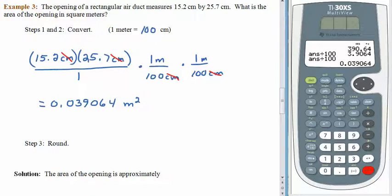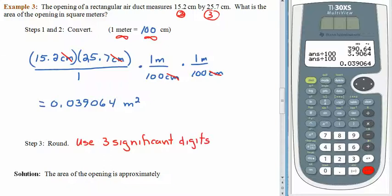And I know you want to keep all of those digits, but they are not all meaningful. We know that we have infinitely many significant digits here, and infinitely many significant digits here, but this one only has 3, and this one only has 3. So we can only keep 3 significant digits. So when we round, remember those first two zeros are just placeholders. They are not significant digits. So the area of the opening is approximately 0.0391 square meters.